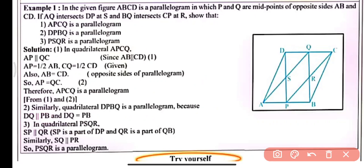In quadrilateral PSQR, SP is parallel to QR as SP is a part of DP and QR is a part of QB. Therefore PS is parallel to QR, and similarly SQ is parallel to PR, so PSQR is also a parallelogram. All three quadrilaterals are parallelograms.